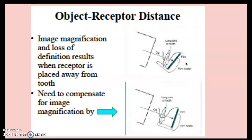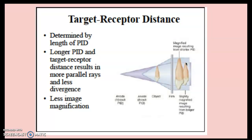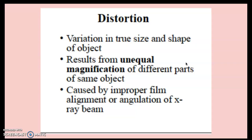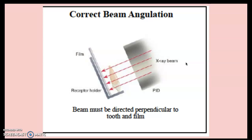You compensate for image magnification by increasing the target-receptor distance — the distance between the source, the target, and the receptor — as determined by the length of the PID. A longer PID and greater target-receptor distance results in more parallel and less divergent X-rays, producing less image magnification. Distortion is the variation in true size and shape, resulting from unequal magnification of different parts of the same object. It's caused by improper film alignment and angulation of the beam. The object-receptor alignment must be parallel to avoid angular relationships and distortion, and the beam must be perpendicular to both the tooth and the film.